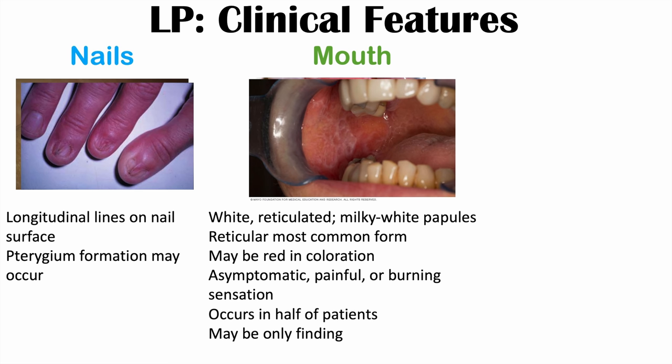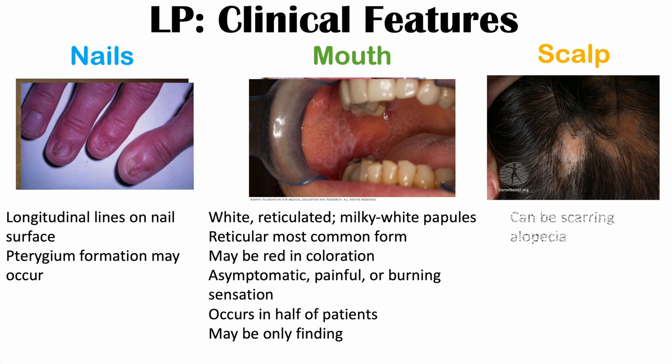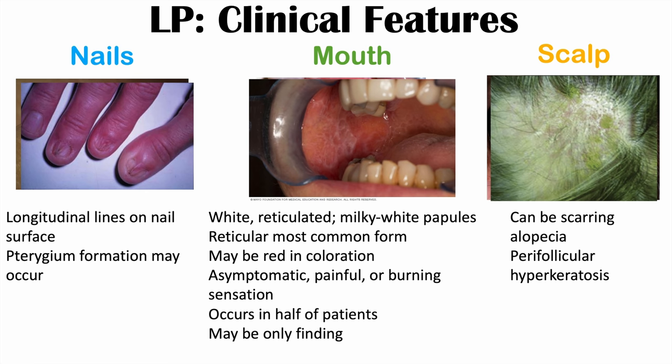The scalp can also be affected in what is known as lichen planopolaris, which can be a scarring alopecia. There is perifollicular hyperkeratosis, and patches of alopecia can occur from this condition.